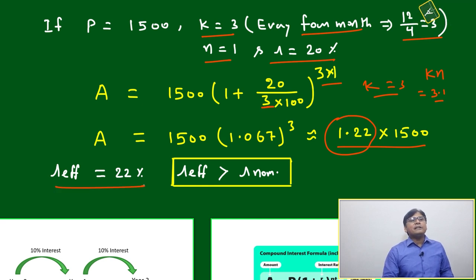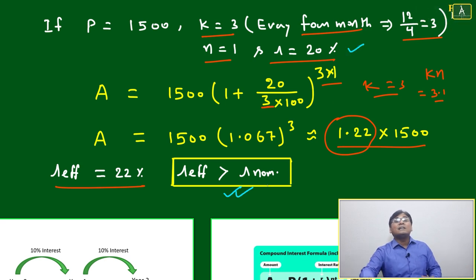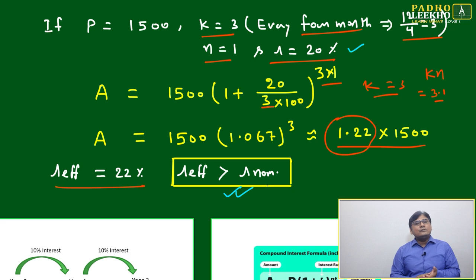What we have learned here: r effective is 22%, while the original r was 20%. R effective will always be more than r nominal. That is the interest strategy of banks or any financial institutions.